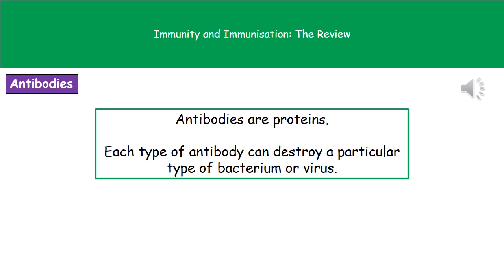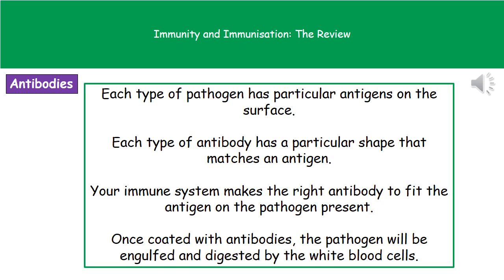An antibody is a protein that is specific to one particular bacteria or virus. You have different antibodies for each different bacterial or viral pathogen you encounter. On the surface of the pathogen there is a protrusion called an antigen, which has a specific shape. The antibodies our body makes also have a specific shape that is complementary to that antigen. When a pathogen gets into your body, your immune system makes the right antibody to fit that antigen. Once those antibodies are made, they stick to the antigens on the surface of the pathogen, and the phagocytes come in to engulf and digest it.